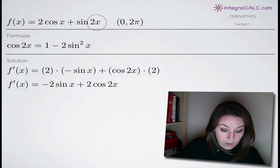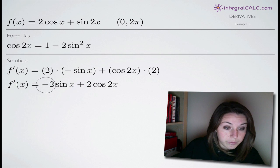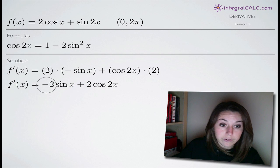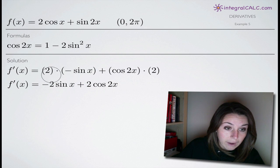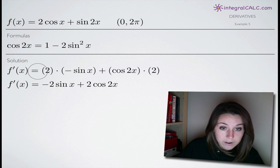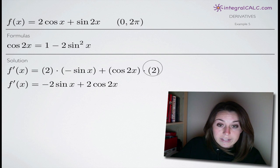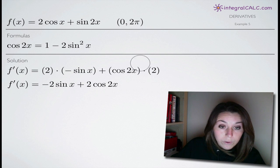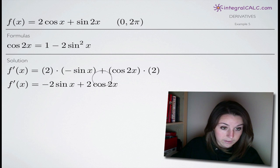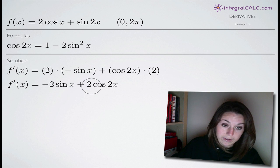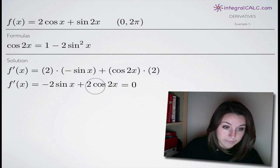Now, we're going to simplify our derivative function. We bring the negative sine out in front and the 2 out in front as a coefficient on the cosine of 2x. We get negative 2 sine of x plus 2 cosine of 2x.